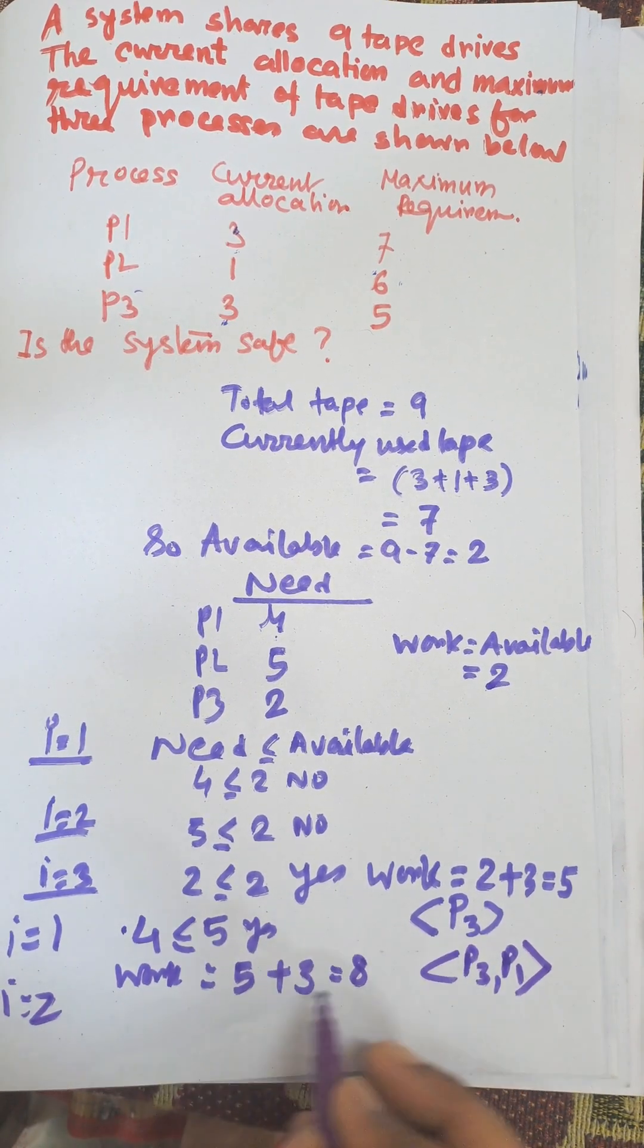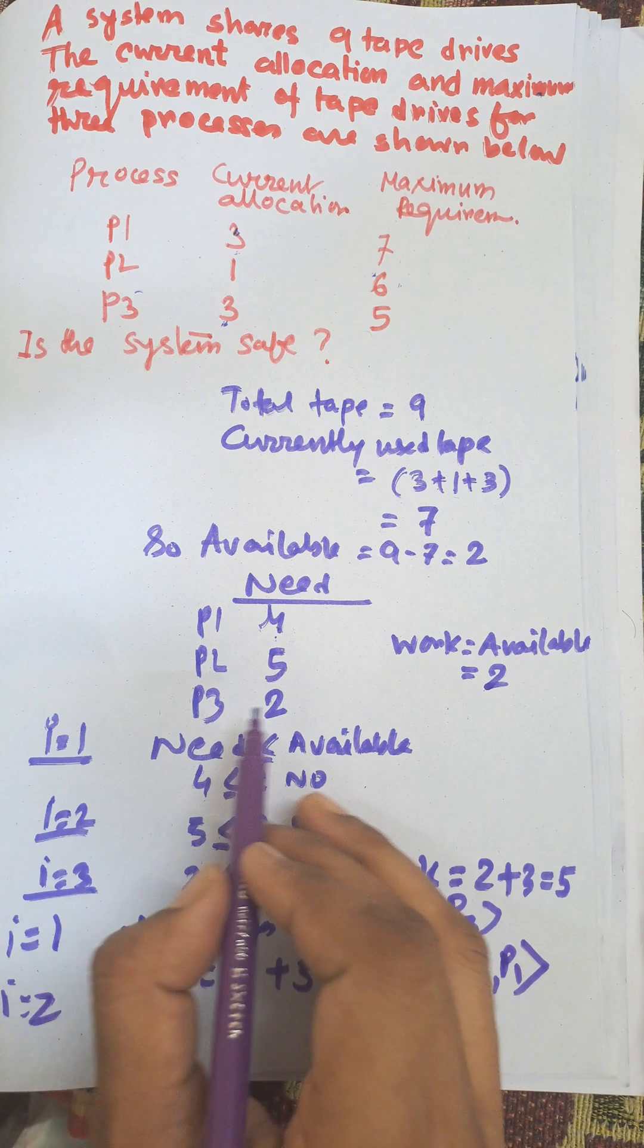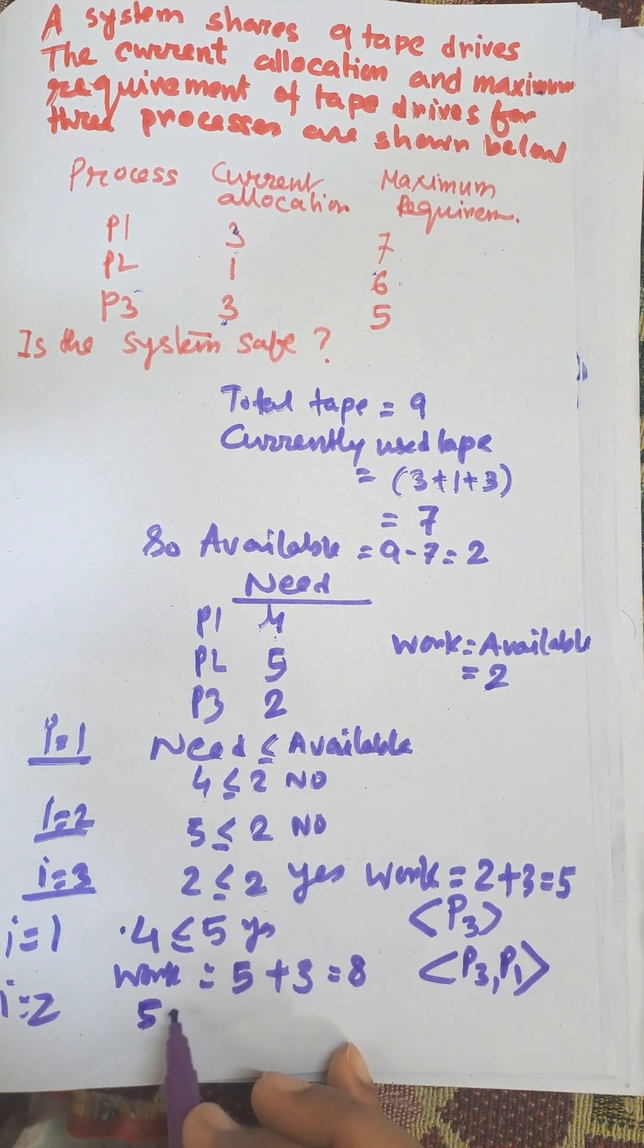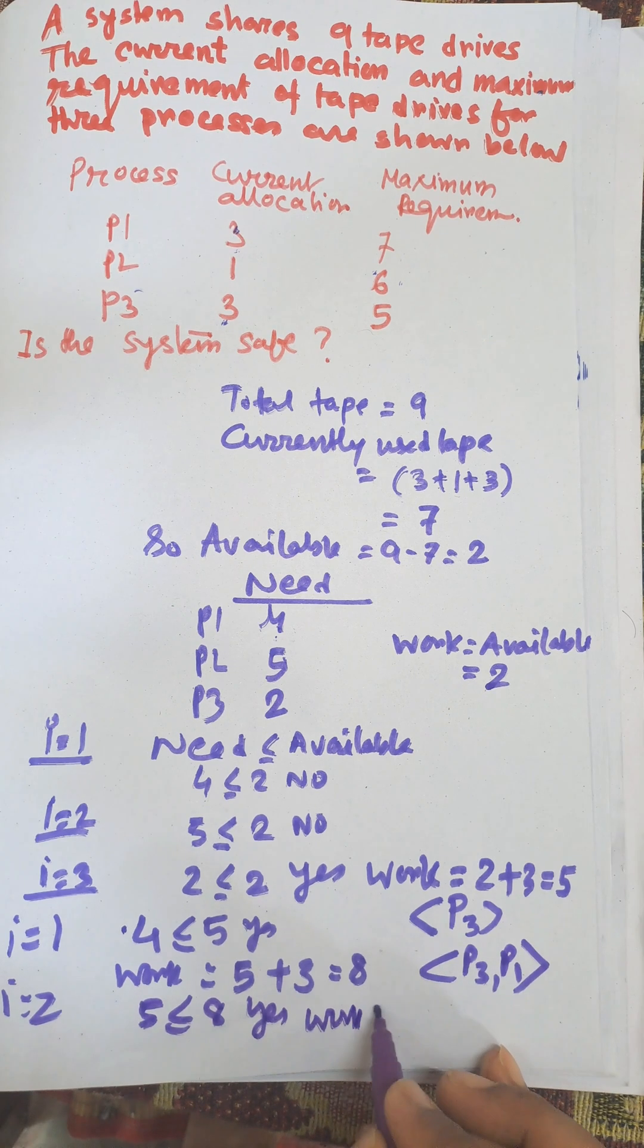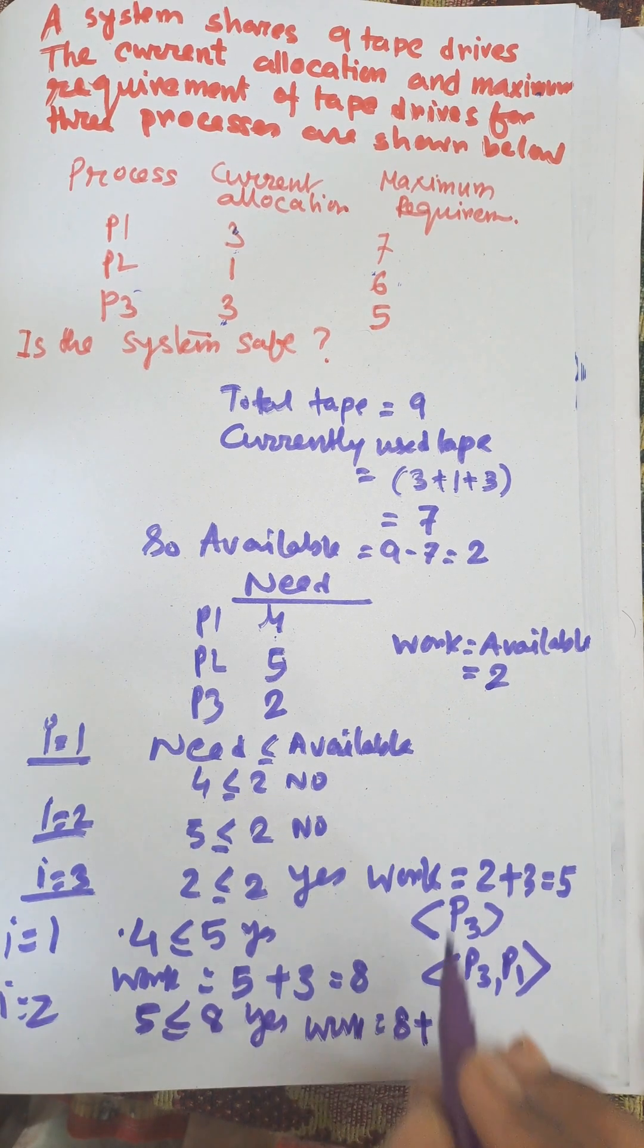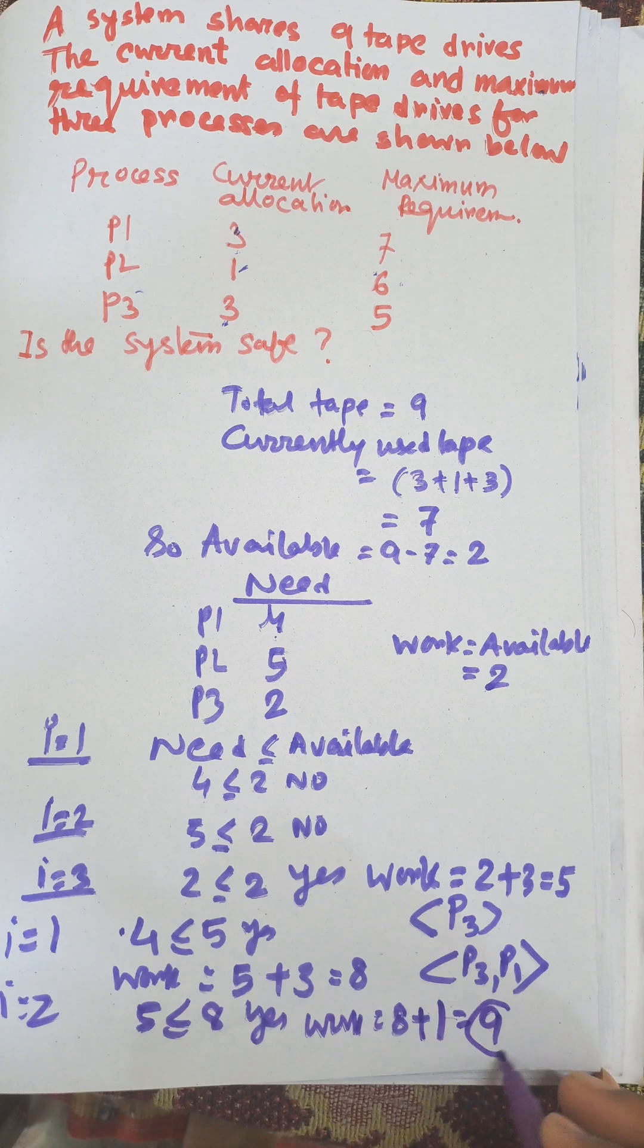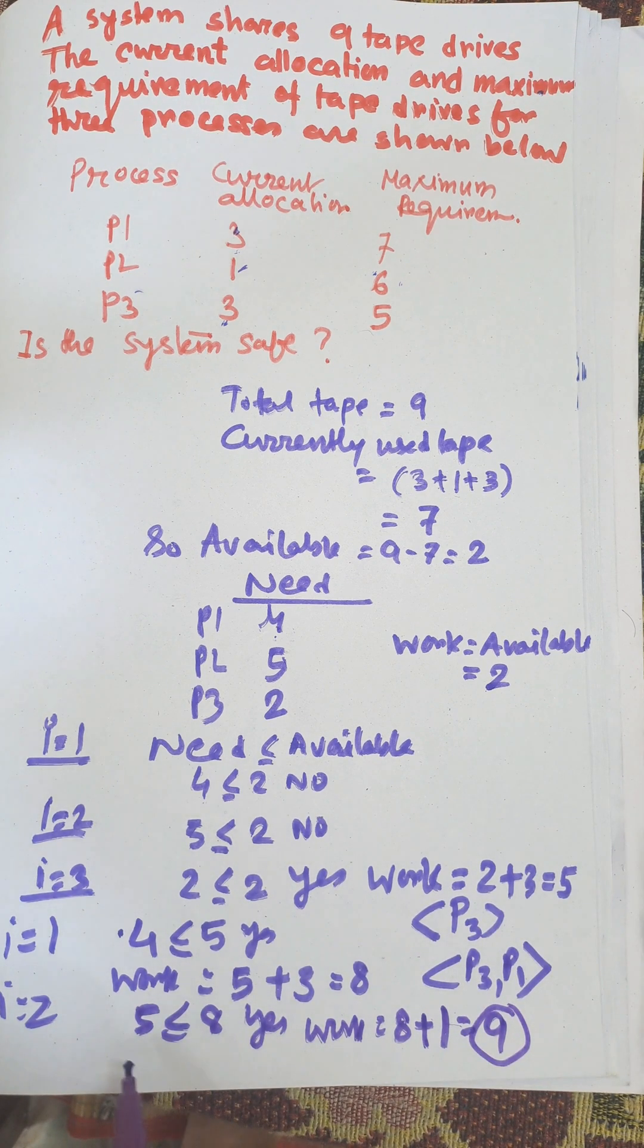For i equals two, your work is eight and need is five. Five less than eight? Yes. Now work is eight plus one equals nine. Now all tape drives are released.